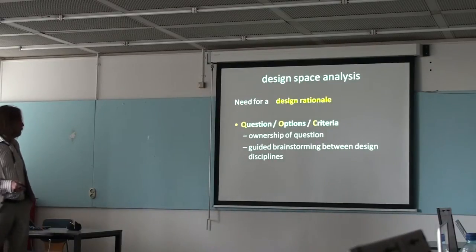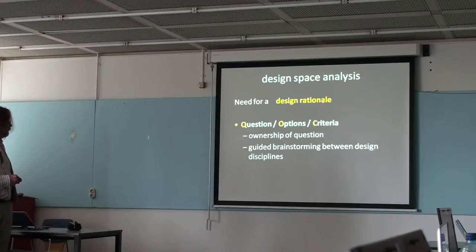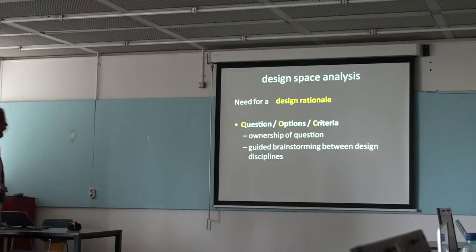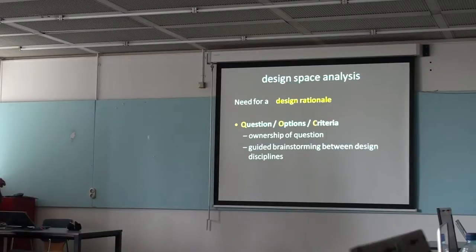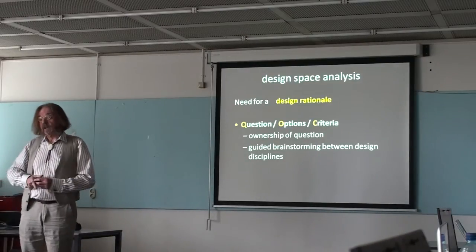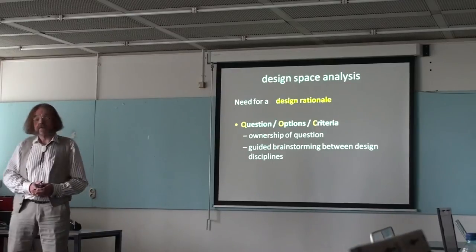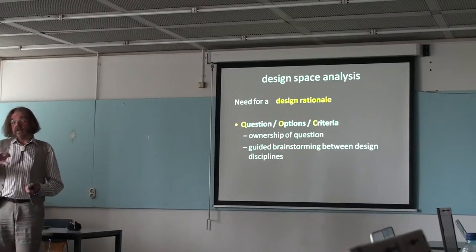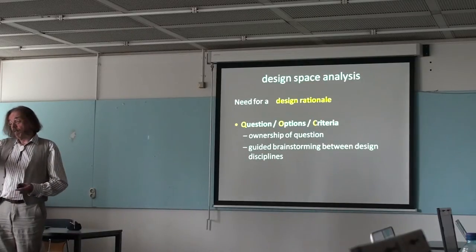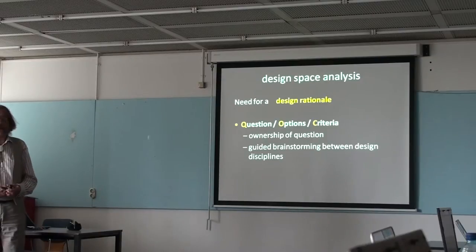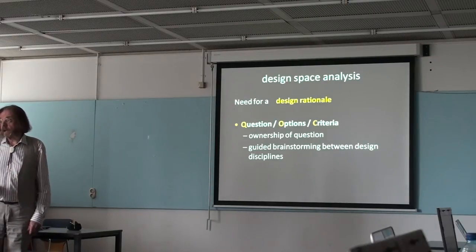Now I'd like to introduce some kind of formalism. You might already know this — I'm going to talk today about design rationale. It's a very simple formalism but one that helps. The formalism is built on questions, on options or possible answers, and on criteria. Questions mean there is a design request — for instance, where should information be available, or how should the user provide an answer? Options indicate the different ways we could answer the question, like writing on paper, hitting a button, choosing from a menu, or typing.